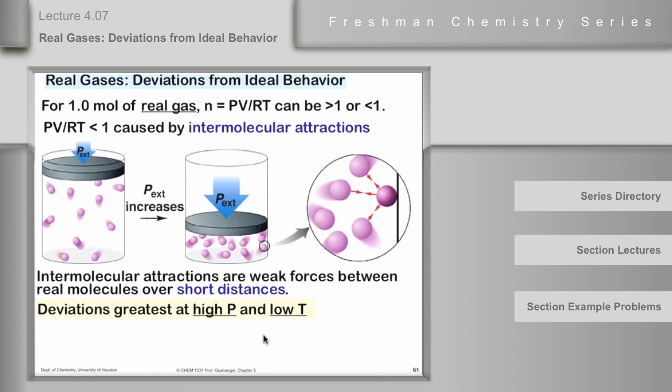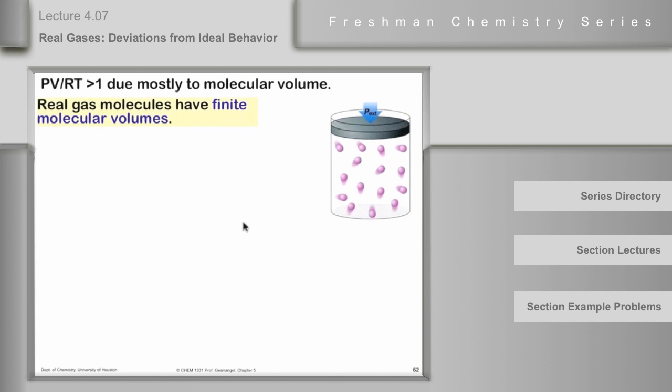What about the other side of this? What about when PV over RT is greater than one? If we have some molecules over here, and let's suppose they are not small molecules, let's make them big molecules. Let's say this is ethane or propane, something like that. Relatively large molecules.